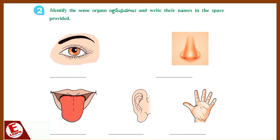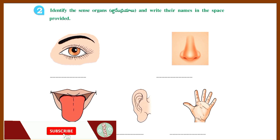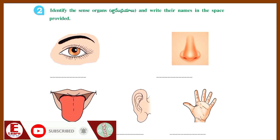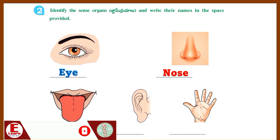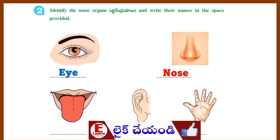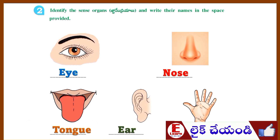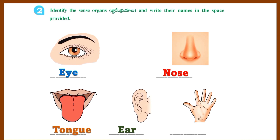Section 2: Identify the sense organs and write their names in the space provided. Answer: Eye, Nose, Tongue, Ear, Hand.